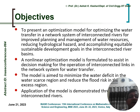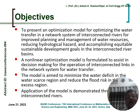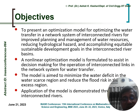The objective of this work is to present an optimization model for optimizing water transfer in a network system of interconnected rivers, for improved planning and management of water resources. The model aims not only to manage water resources to meet demand, but also to reduce hydrological hazards — primarily flooding. It accomplishes equitable sustainable development goals by fulfilling agricultural, drinking water, industrial, and municipal demands, while also maintaining environmental flows in the river system for good ecosystem health.